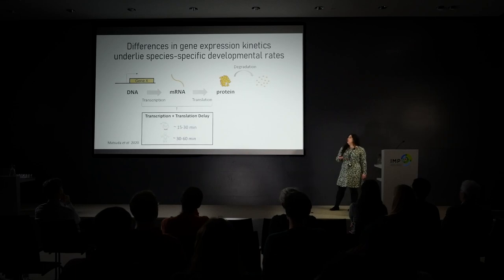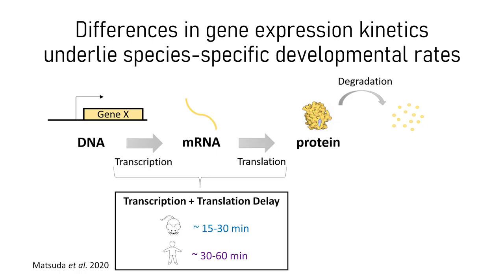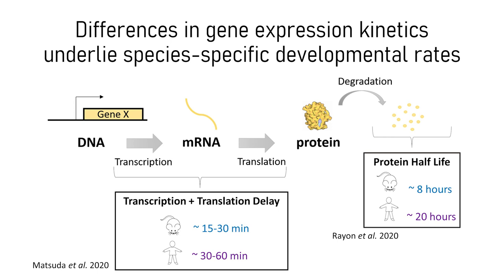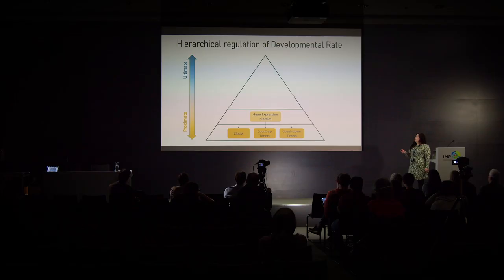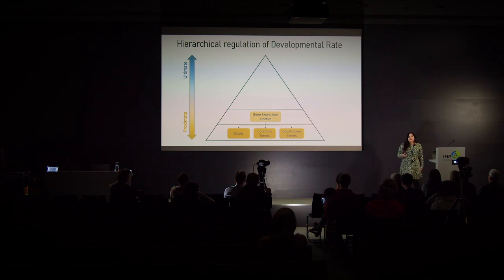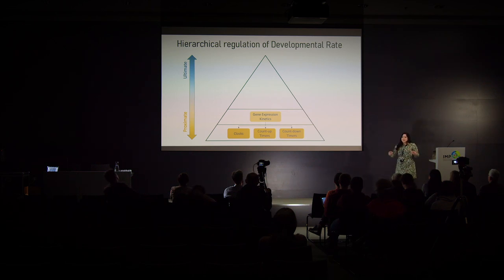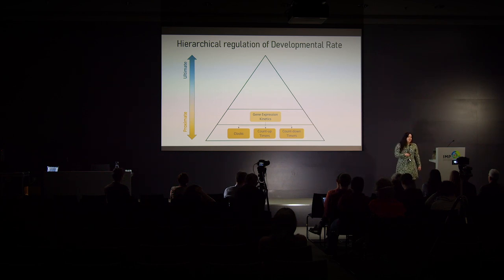Work from other labs has shown that the cumulative time from the start of transcription to observing functional protein is about twice as long in human cells as in mouse cells, and once the protein is made, the half-life is more than twice as long for human cells than for mouse cells. These are genome-wide differences across the entire proteome and transcriptome — very general differences that suggest faster gene expression and faster protein degradation could accelerate these clocks and timers.